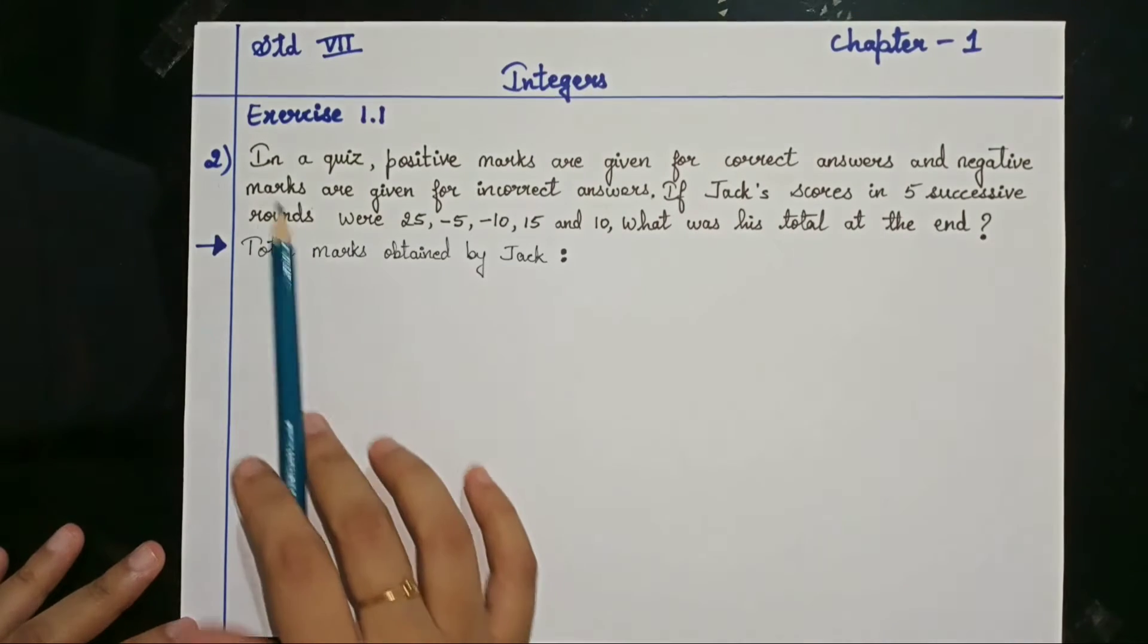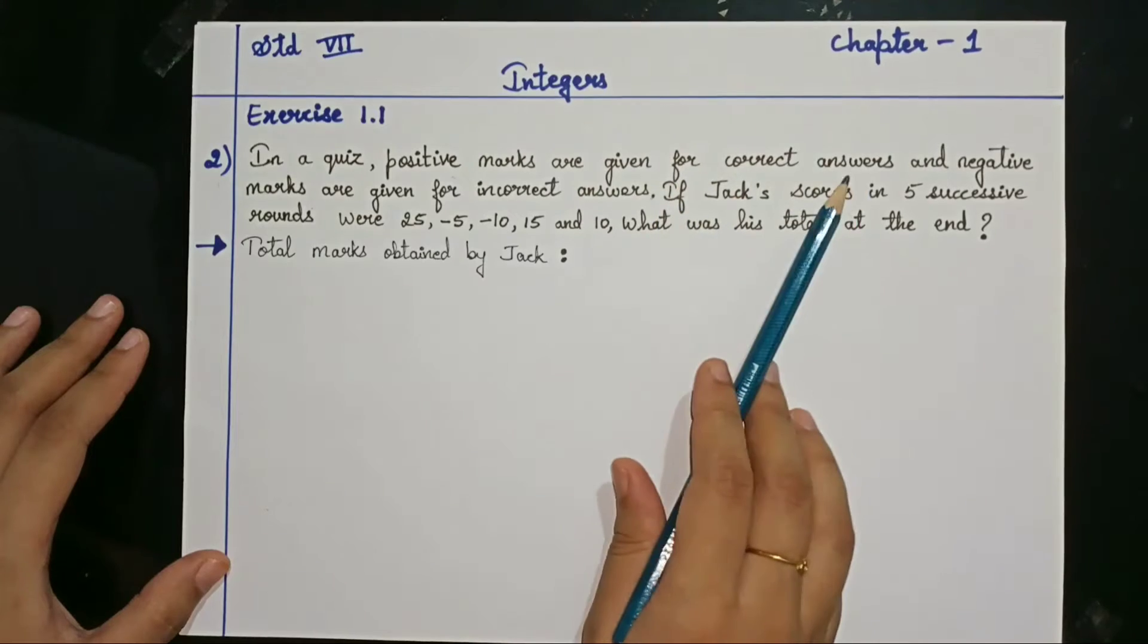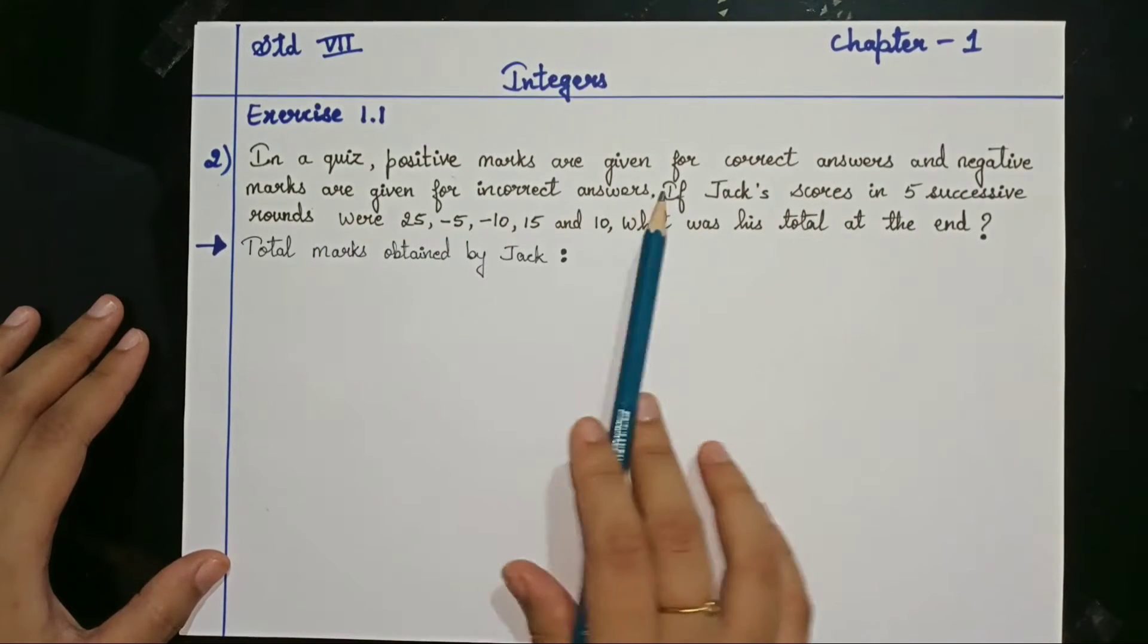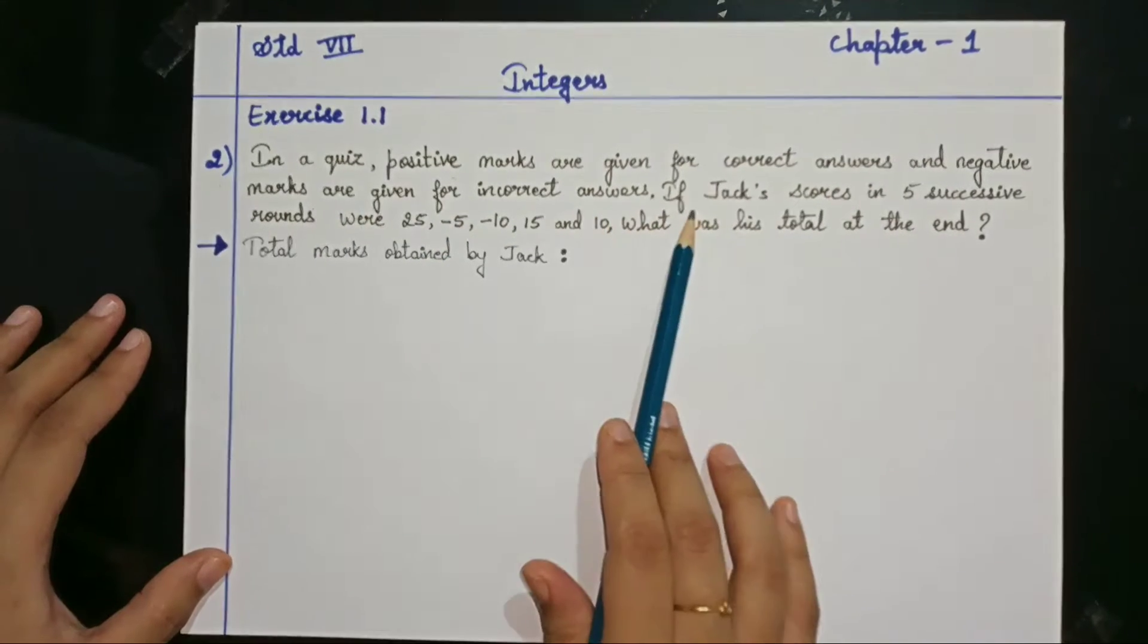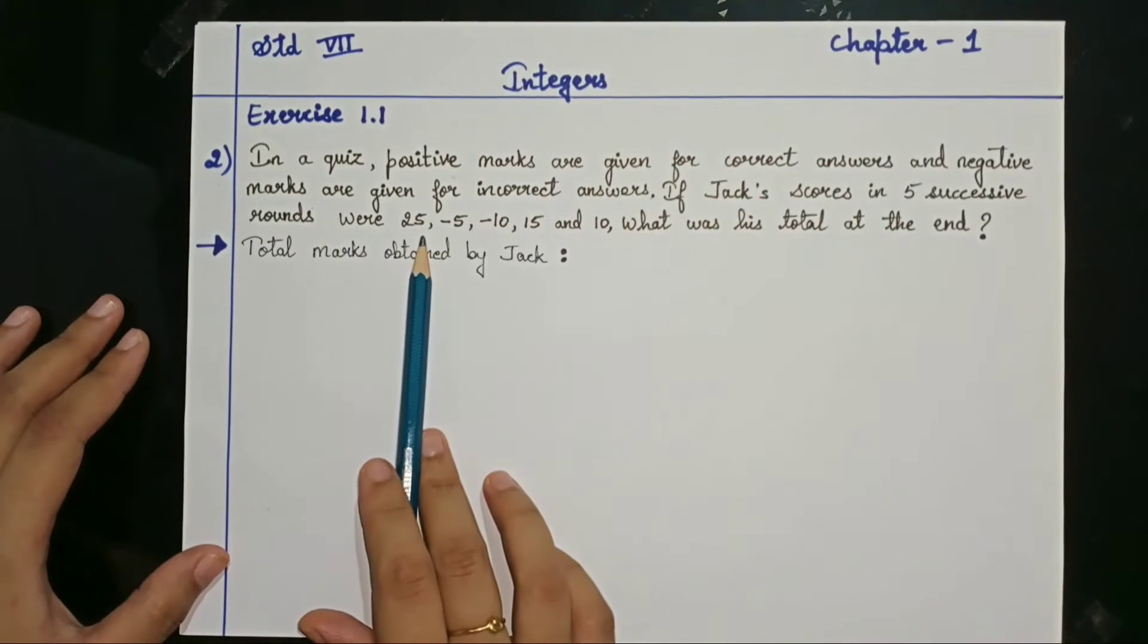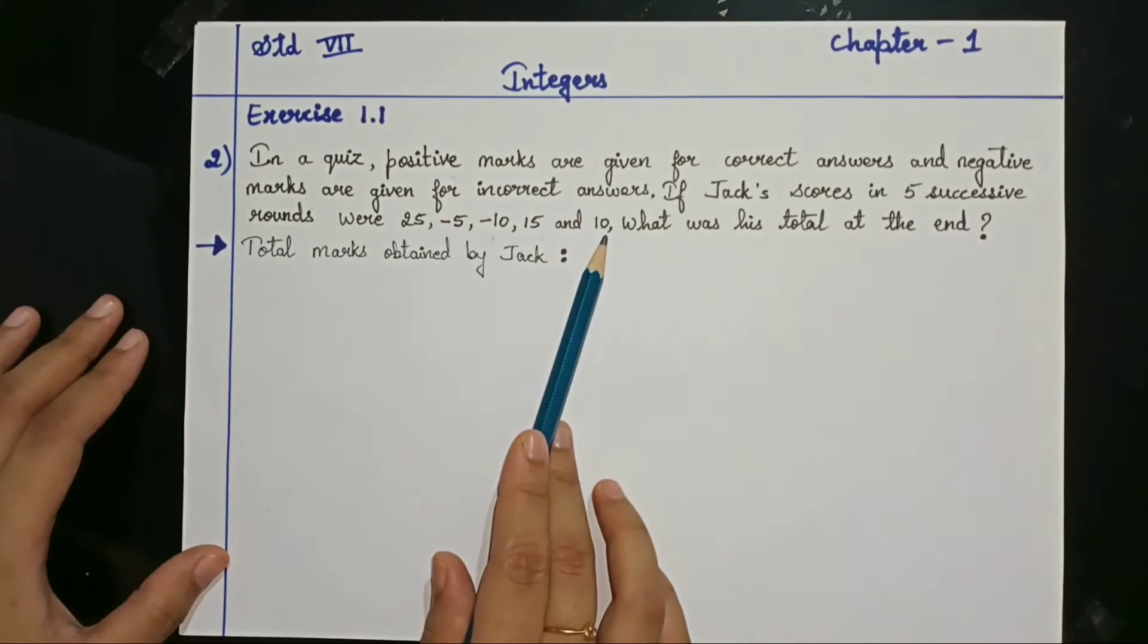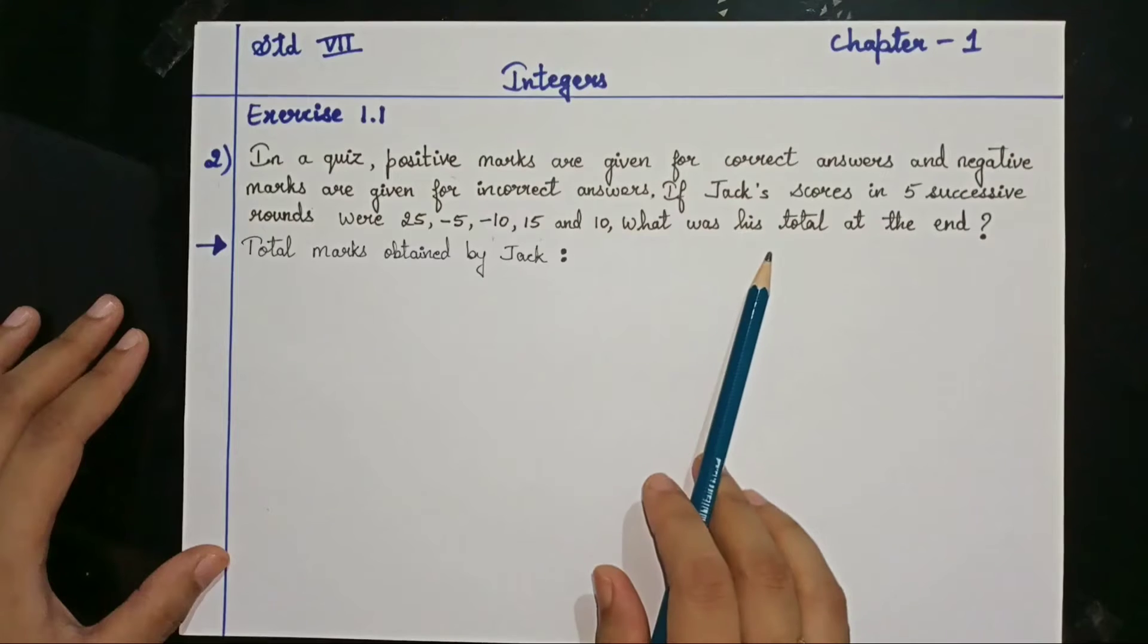So let's see what the question tells. In a quiz, positive marks are given for correct answers and negative marks are given for incorrect answers. If Jack's score in 5 successive rounds were 25, minus 5, minus 10, 15 and 10, what was his total at the end?